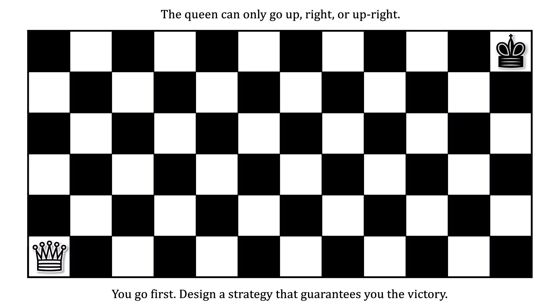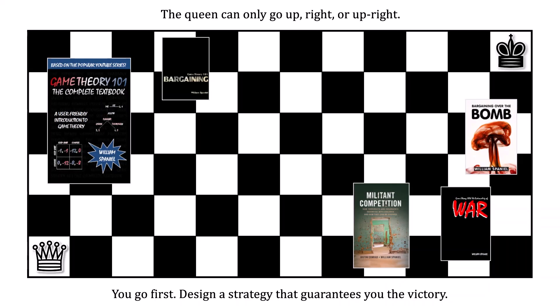And while you think about that, check out some of these cool books that I've written. Your hints for today are twofold. First, this is an application of backward induction. And second, through a convoluted way, this is a variant of NIMH. And both backward induction and NIMH are topics that I cover in Chapter 2 of Game Theory 101, the complete textbook.